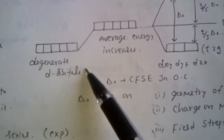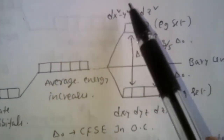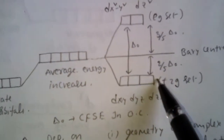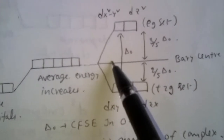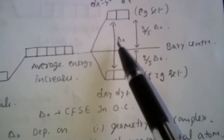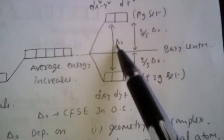The average energy of degenerate d-orbitals increases in the presence of ligands. The dx²-y² and dz² orbitals have more interaction, so their energy increases, while the remaining three orbitals' energy decreases, causing splitting in degenerate d-orbitals. This is crystal field splitting in an octahedral complex. The two higher-energy orbitals form the Eg set, and the three lower-energy orbitals form the T2g set. The energy difference between the Eg set and T2g set is the crystal field splitting energy, denoted by Δ₀ (delta naught).